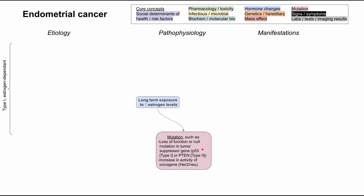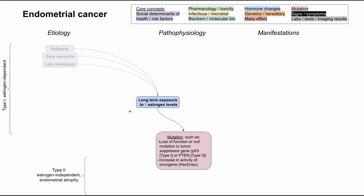The etiologies of endometrial cancer can be grouped into estrogen-dependent type 1 and estrogen-independent type 2. Type 1 is related to long-term exposure to high estrogen levels. Type 2 is estrogen-independent, usually related to age, endometrial atrophy, smoking, and some additional genetic mutations. Let's start with the type 1 estrogen-dependent causes that all link to long-term exposure to high estrogen.